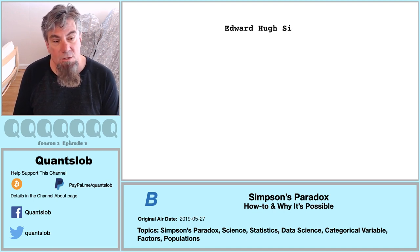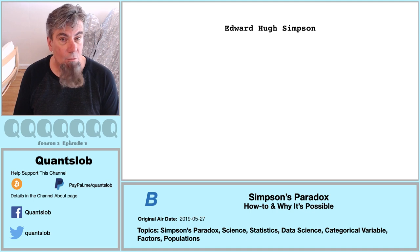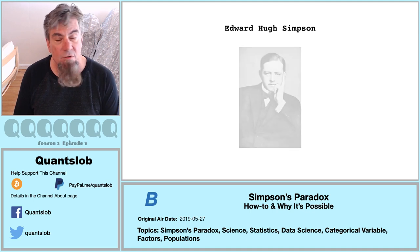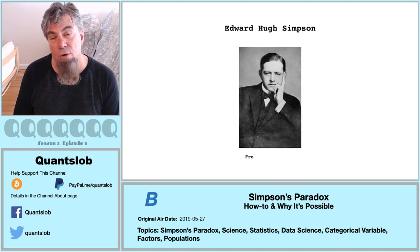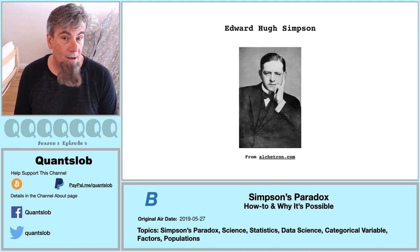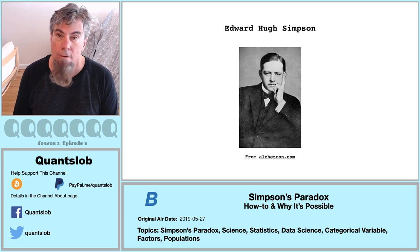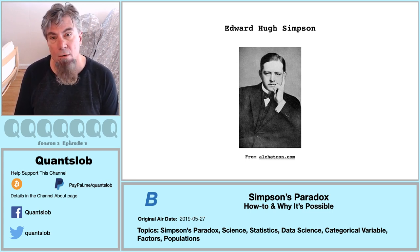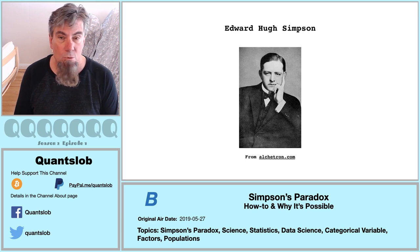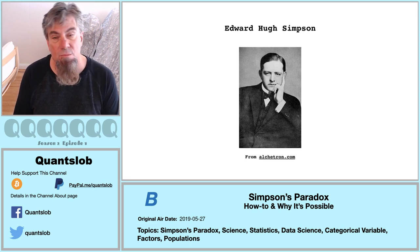Simpson's Paradox is named after Edward Hughes Simpson, who is otherwise known as having served as a British codebreaker or cryptanalyst during World War II. Not to be confused with Thomas Simpson, who was around about two centuries prior and who is known for Simpson's Rule or Simpson's Approximation.